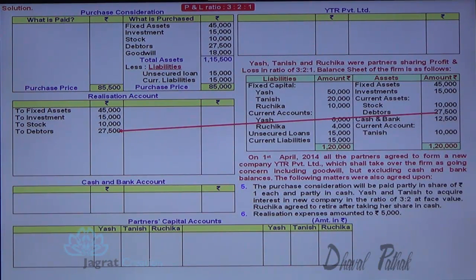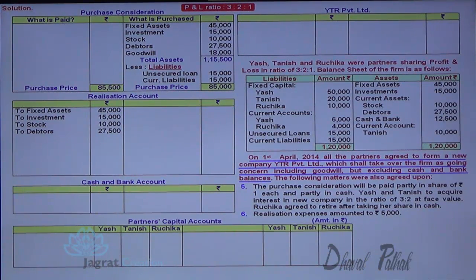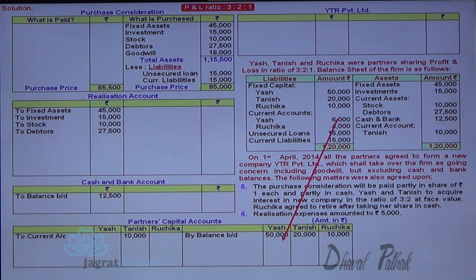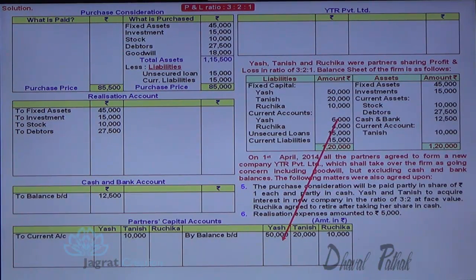Cash and bank balance is not sold, so 12,500 goes to the cash and bank account. The current account of Tanish will be debited; partners' capital accounts will be debited. Fixed capital accounts are credited to Yash, Tanish and Ruchika. As the partnership firm is dissolved, there is no need to keep separate fixed capital and current capital accounts — these two accounts can be merged into one capital account at dissolution. Current account balances of Yash and Ruchika being credit are credited to the capital account.